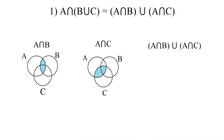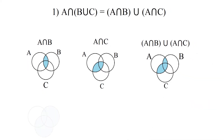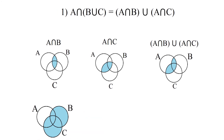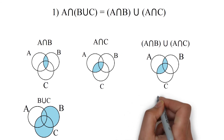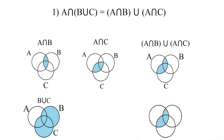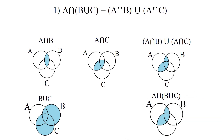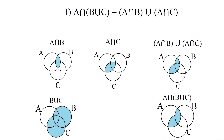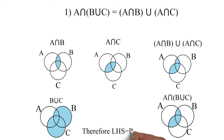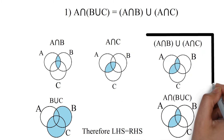The blue shaded region represents (A intersection B) union (A intersection C). This is B union C, which contains all the elements of set B along with set C. This is A intersection (B union C). Therefore from the Venn diagrams we can say A intersection B union A intersection C equals A intersection (B union C).